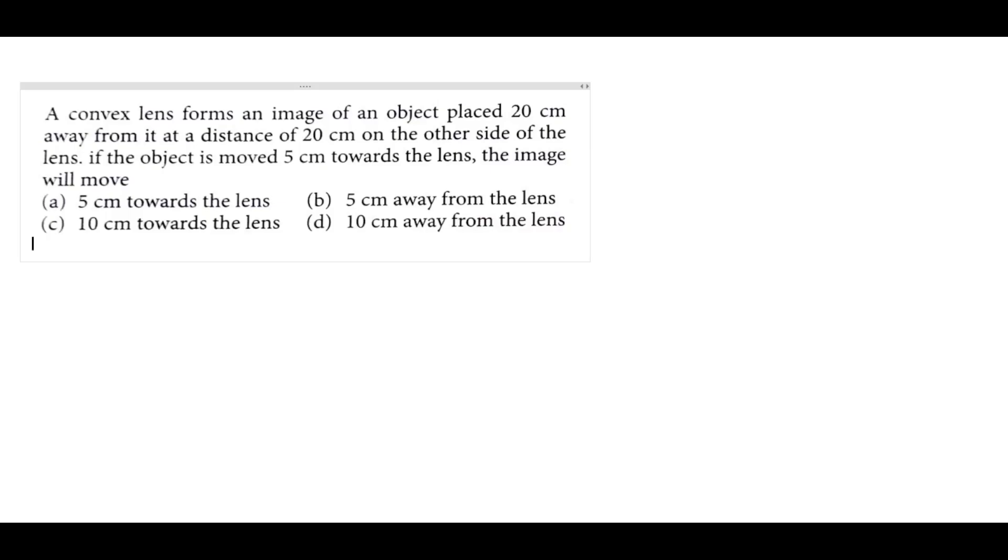First, you can see that the distance of the image equals the object distance at the center of curvature, so our focal length is 10 centimeters positive. U is initially minus 20, then the object moves 5 centimeters towards the lens, so this is minus 15 centimeters.